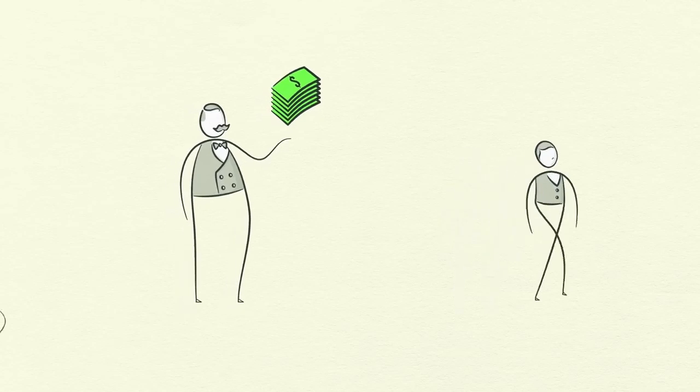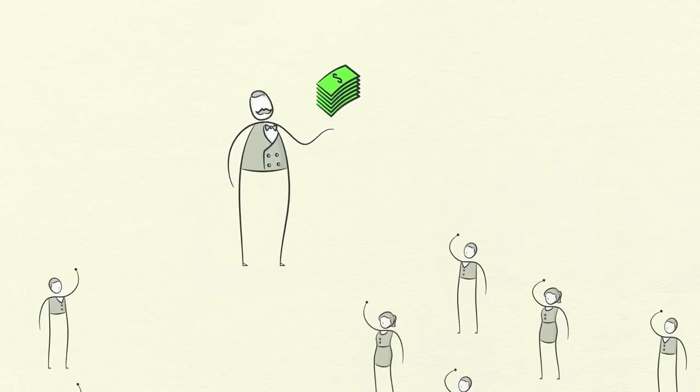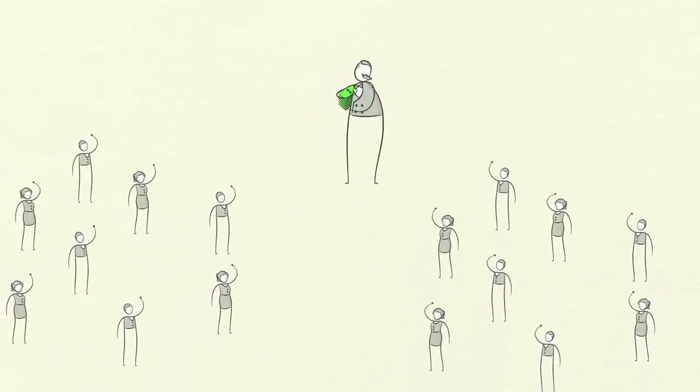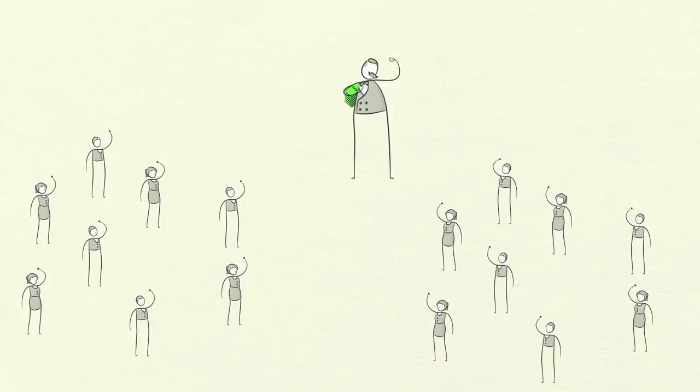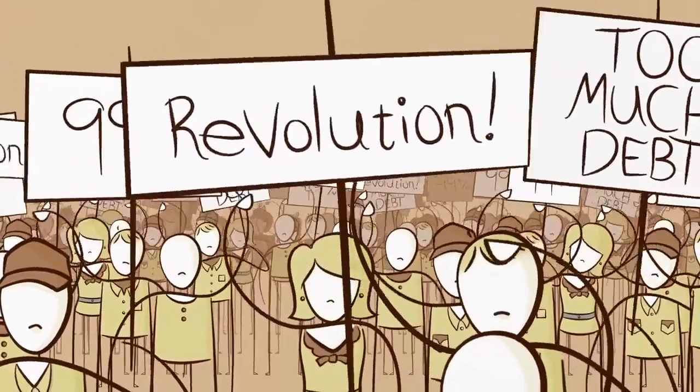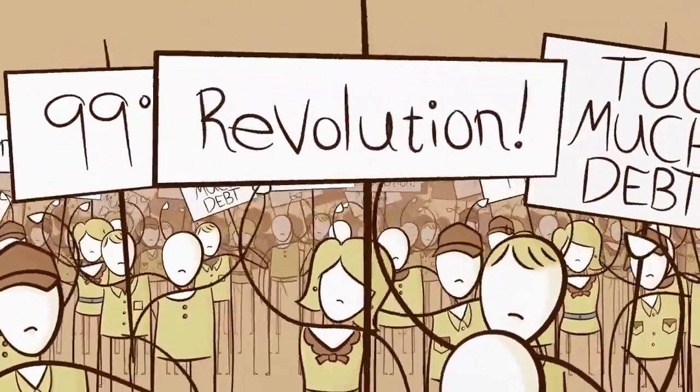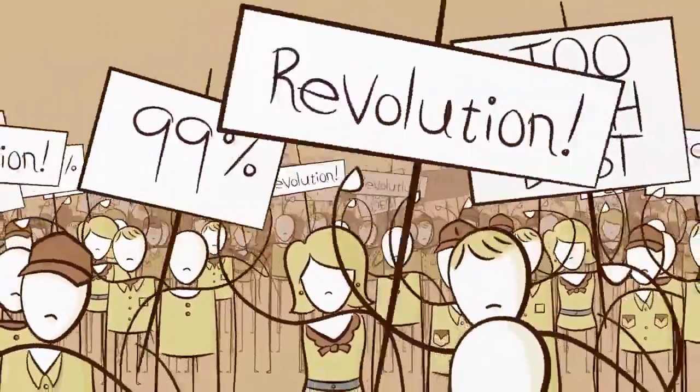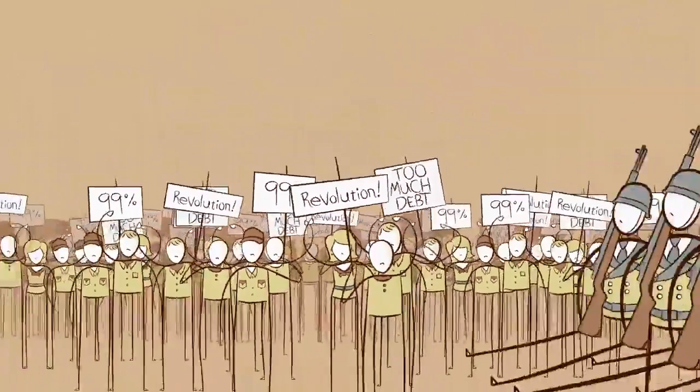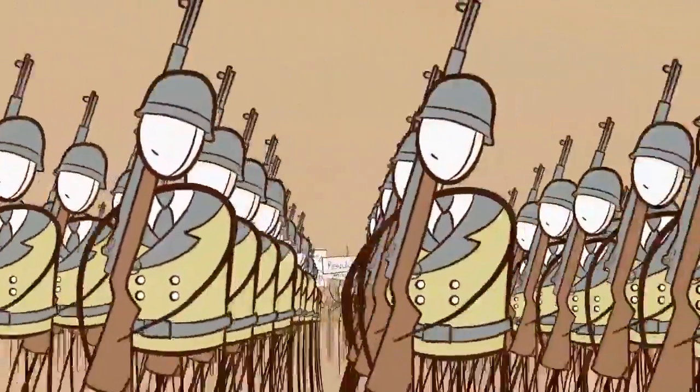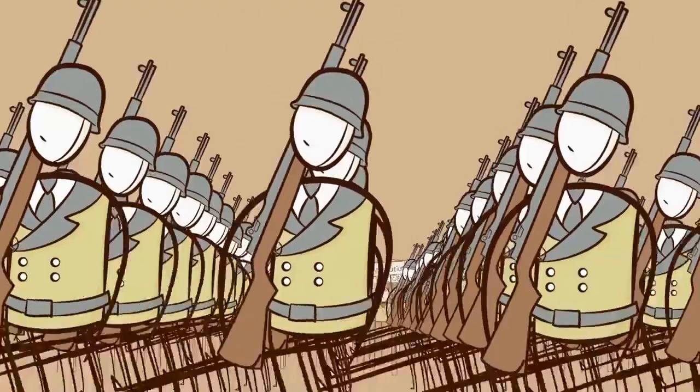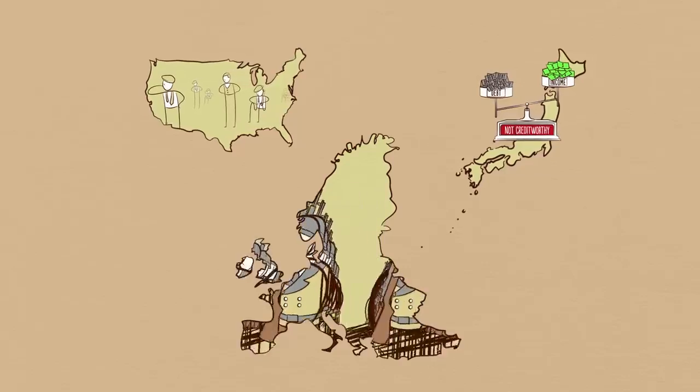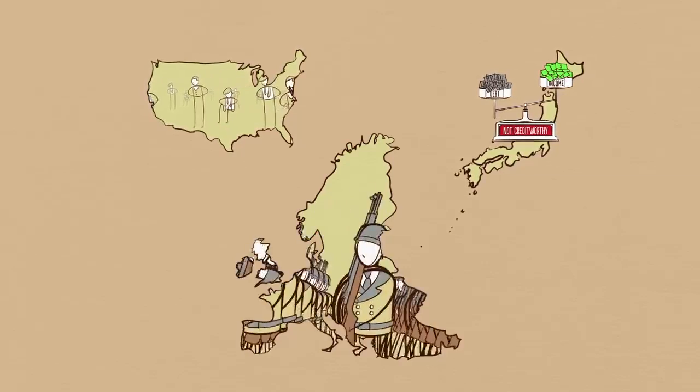The have-nots who are suffering begin to resent the wealthy haves. The wealthy haves being squeezed by the weak economy, falling asset prices, and higher taxes begin to resent the have-nots. If the depression continues, social disorder can break out. Not only do tensions rise within countries, they can rise between countries, especially debtor and creditor countries. This situation can lead to political change that can sometimes be extreme. In the 1930s, this led to Hitler coming to power, war in Europe, and depression in the United States.